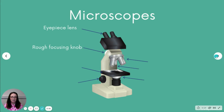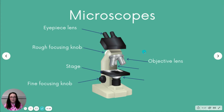Then you have the stage, where you will place your specimen. Next you've got the fine focusing knob, which you use to focus in on the specific detail of the cell. Then there's the objective lens — once in place, that gives you a higher level of magnification and focuses specifically on the specimens on your slide.